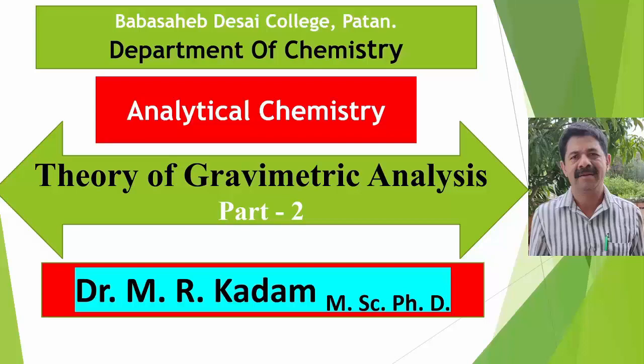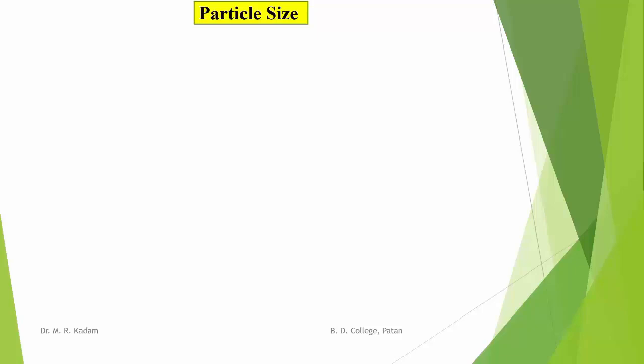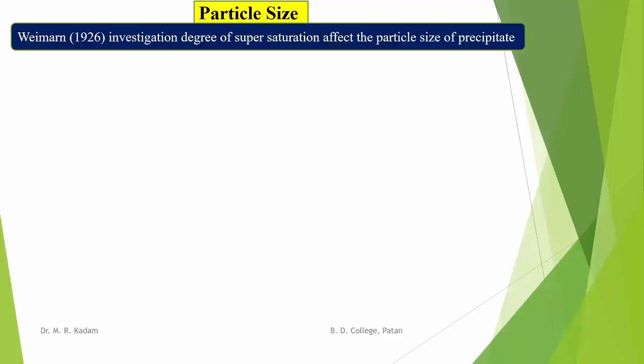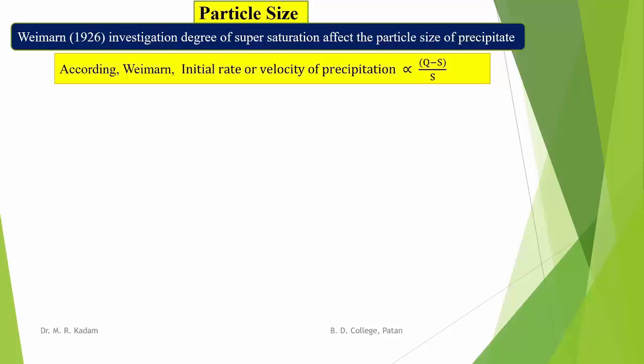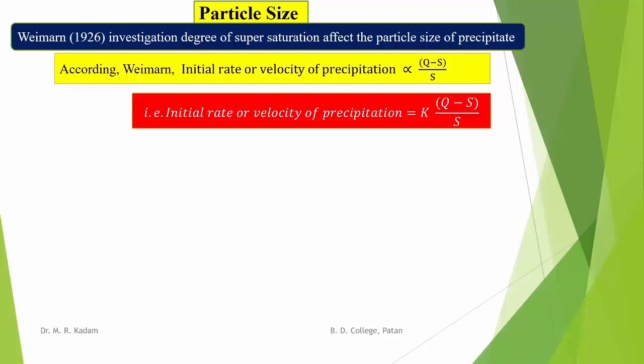Now we learn the Theory of Gravimetric Analysis, Part 2. First we have seen the particle size of the precipitate — the relation between degree of supersaturation and the resulting particle size of the precipitate was investigated by the scientist Wimmer. According to Wimmer, the initial rate or velocity of precipitation is equal to K into (Q minus S) divided by S.